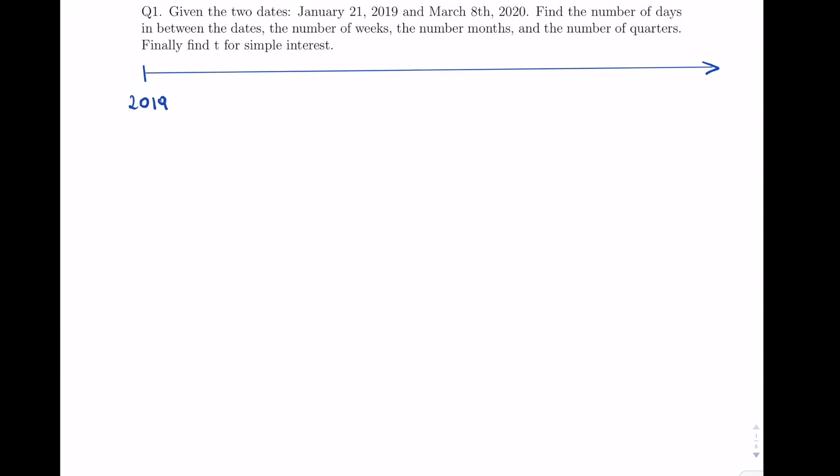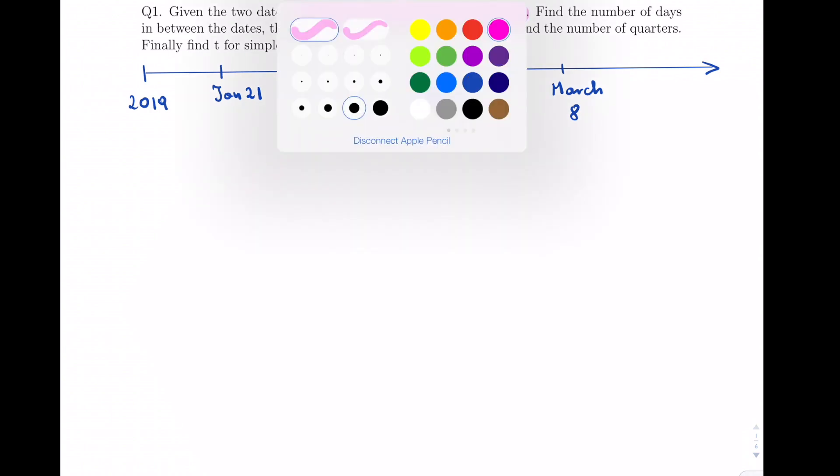Question 1: We want to find the number of days between these two dates and then change it to weeks, months, and so on. The first thing that we'll do is plot these on a timeline, so January 21st in 2019 and then March 8th, 2020.